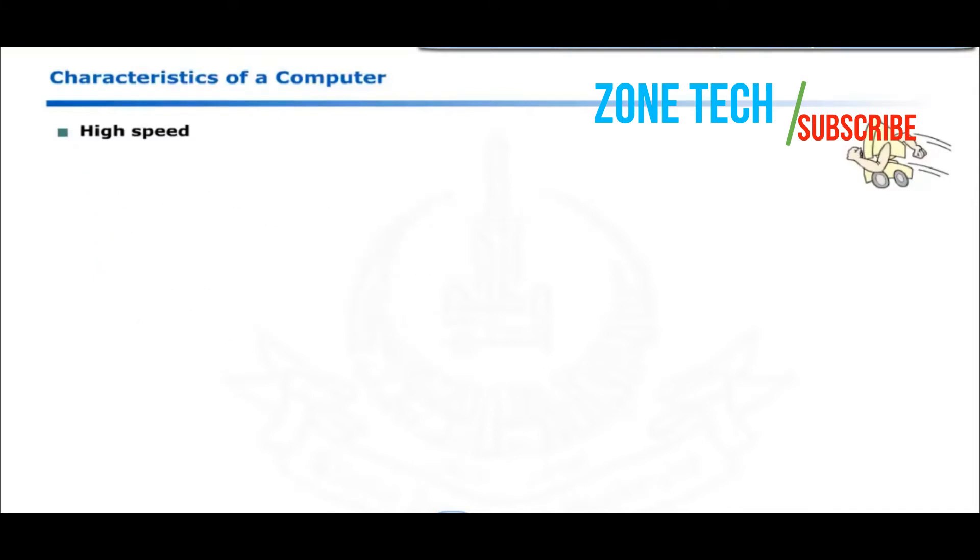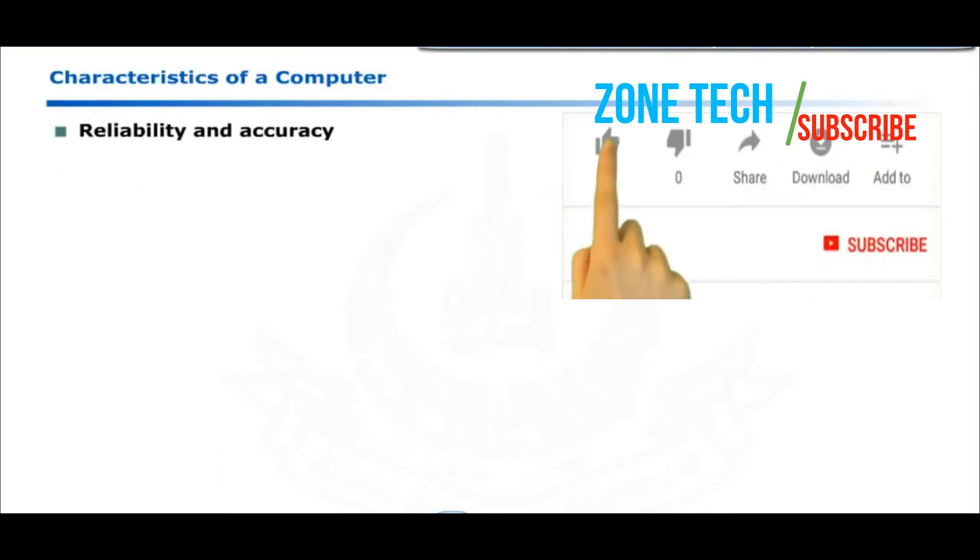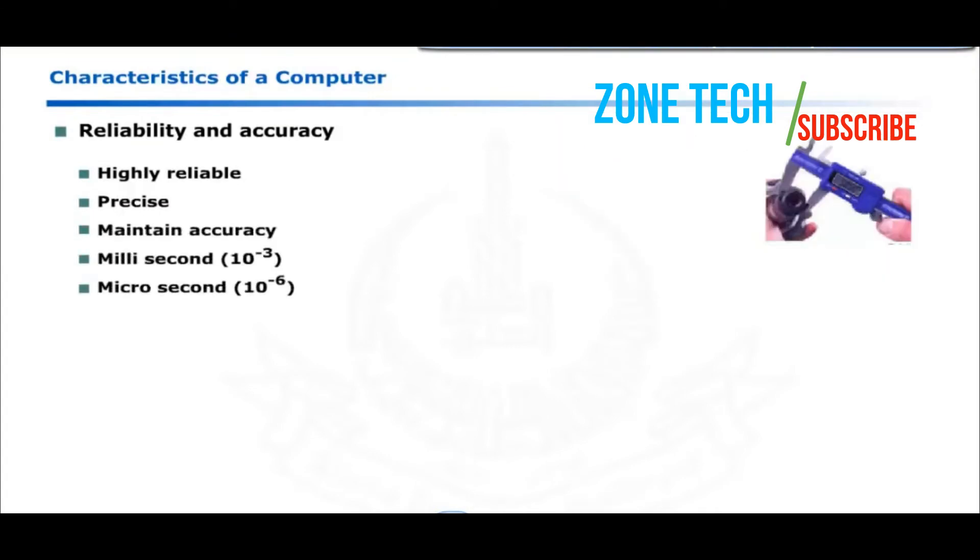Second and the most important feature of computer is reliability and accuracy. The results of computers are highly reliable and precise. Computers maintain accuracy within a millisecond, microsecond, nanosecond, picosecond or any level of required precision. These are also accurate up to many decimal places in mathematical calculations.